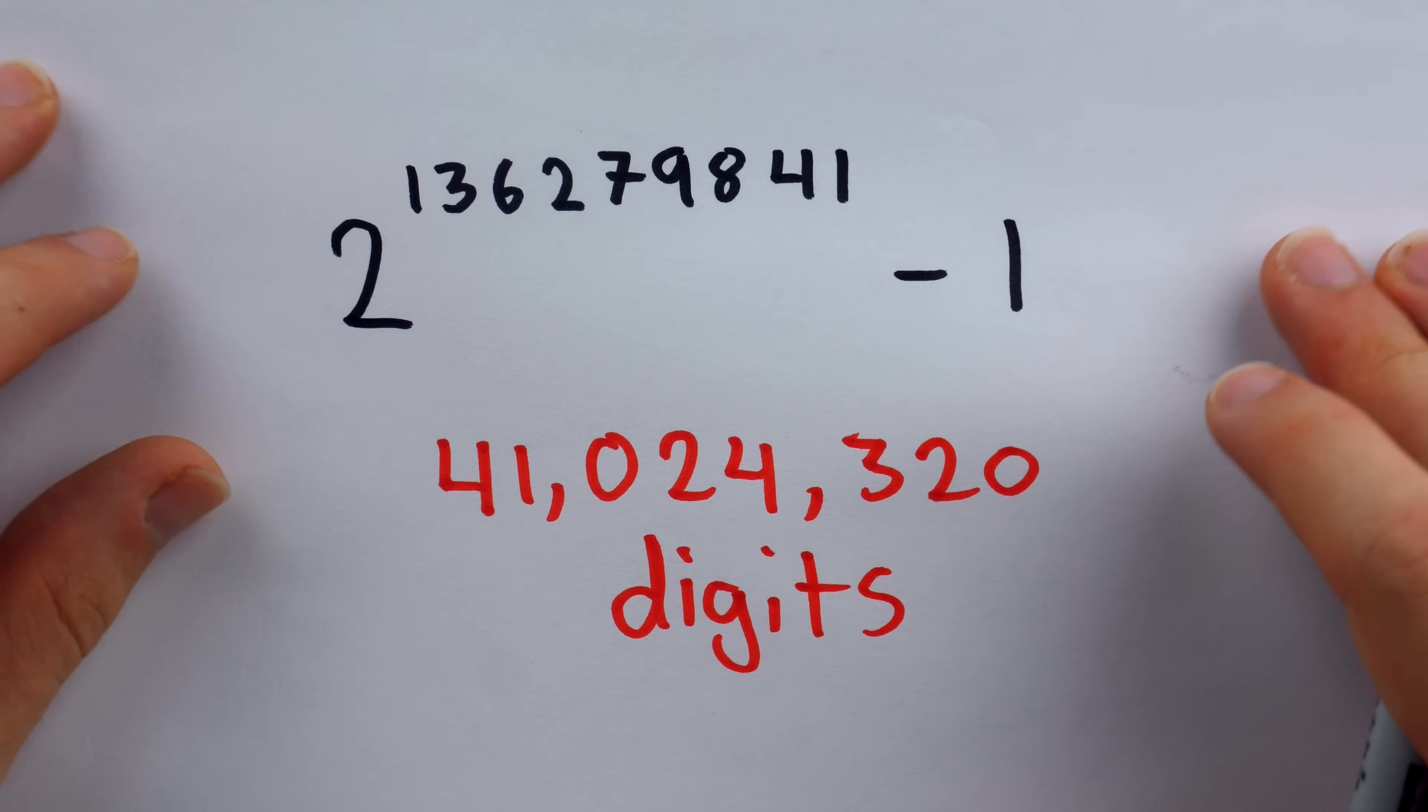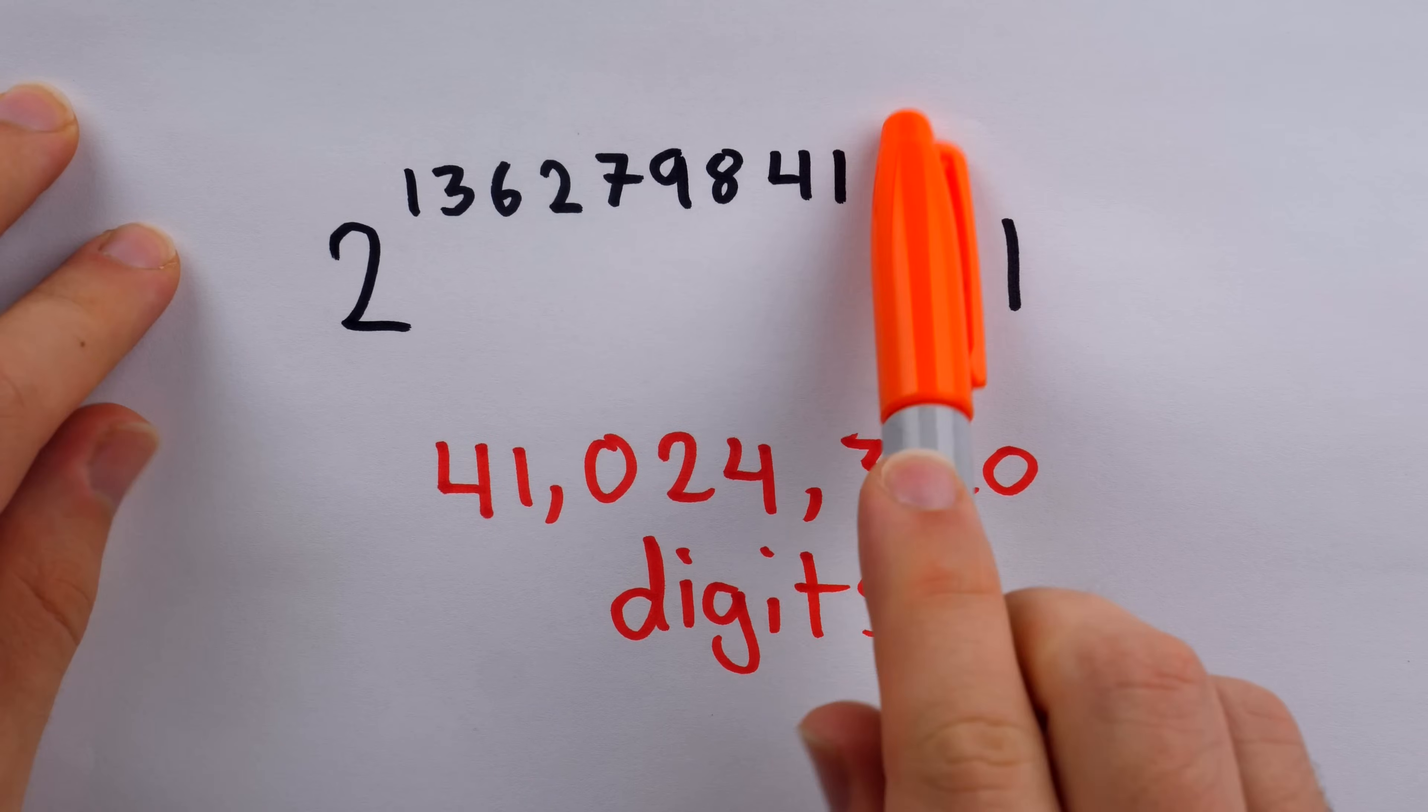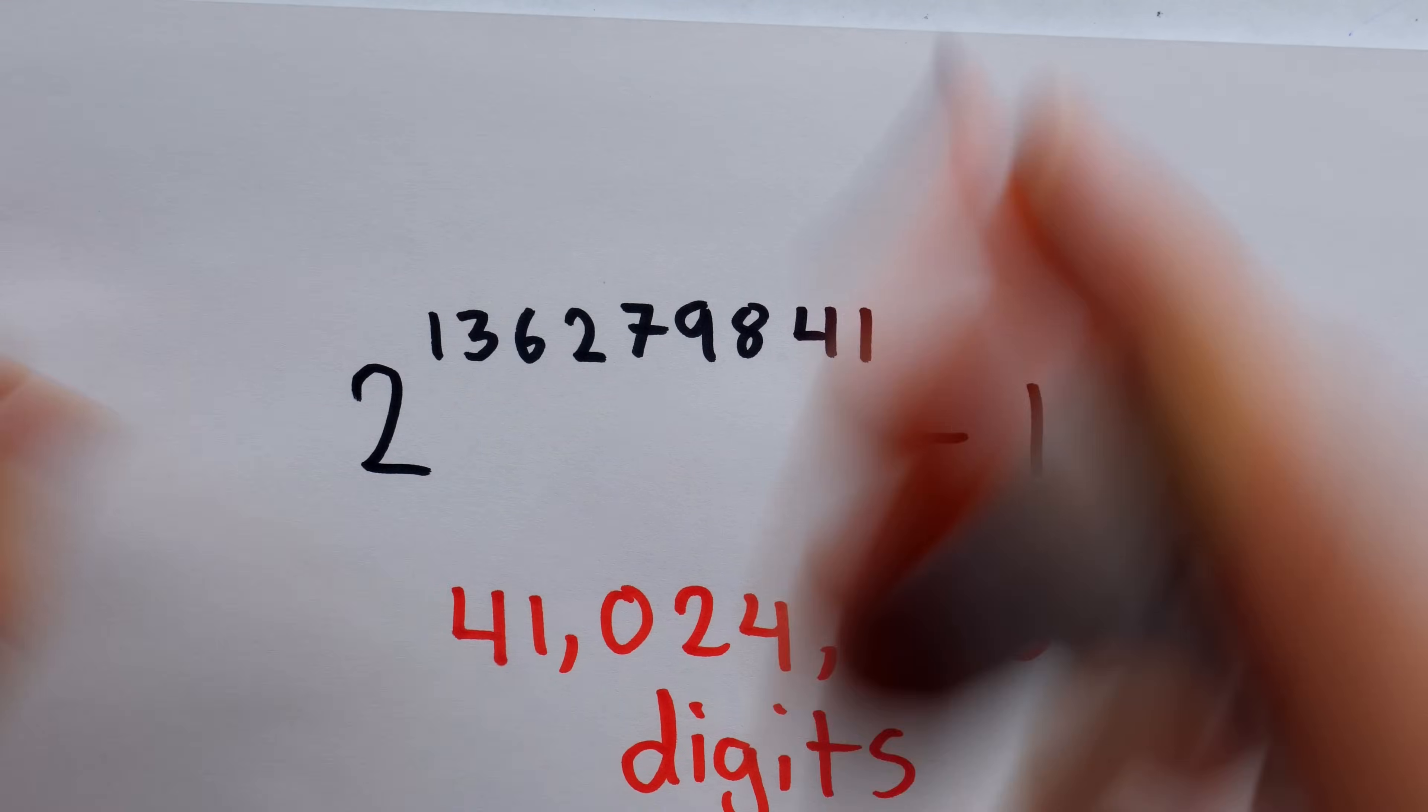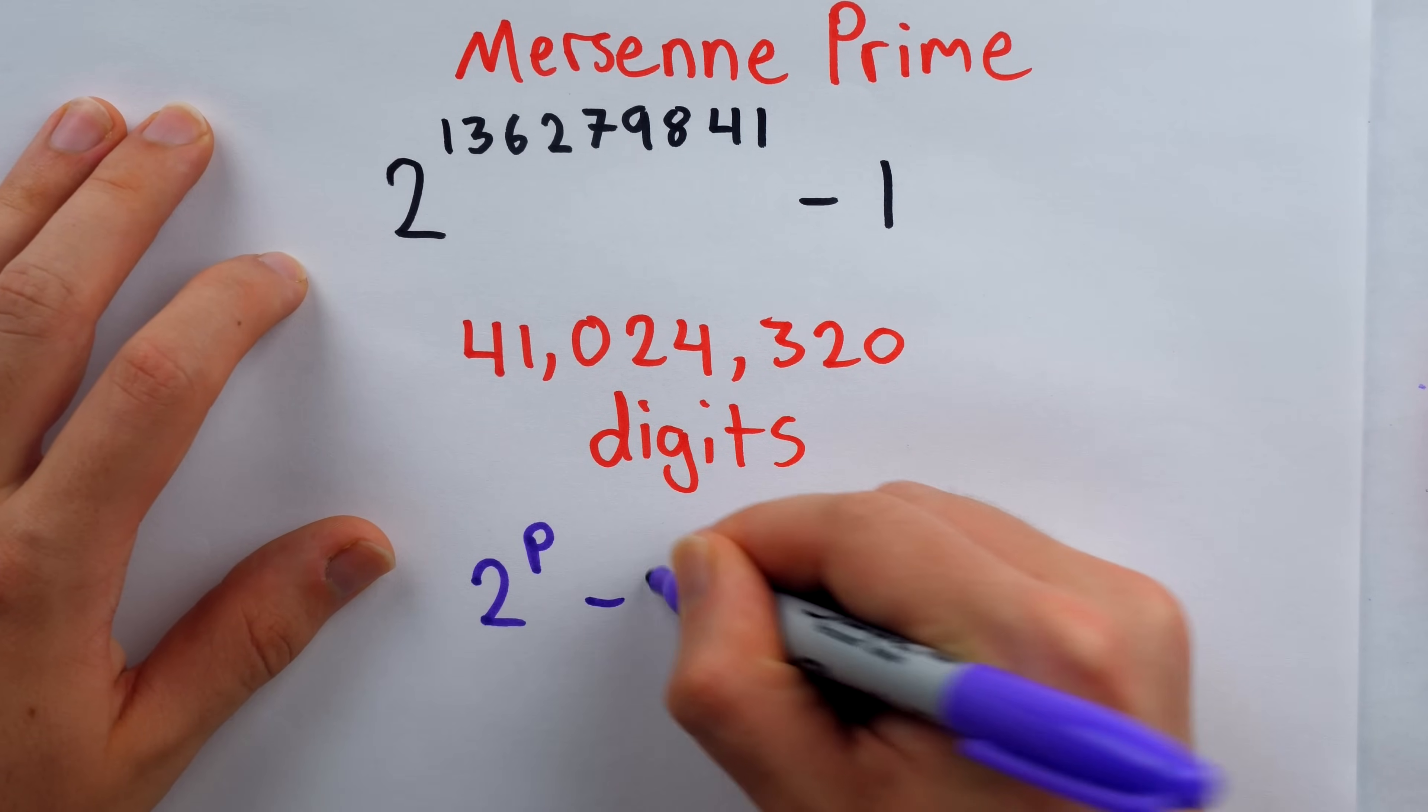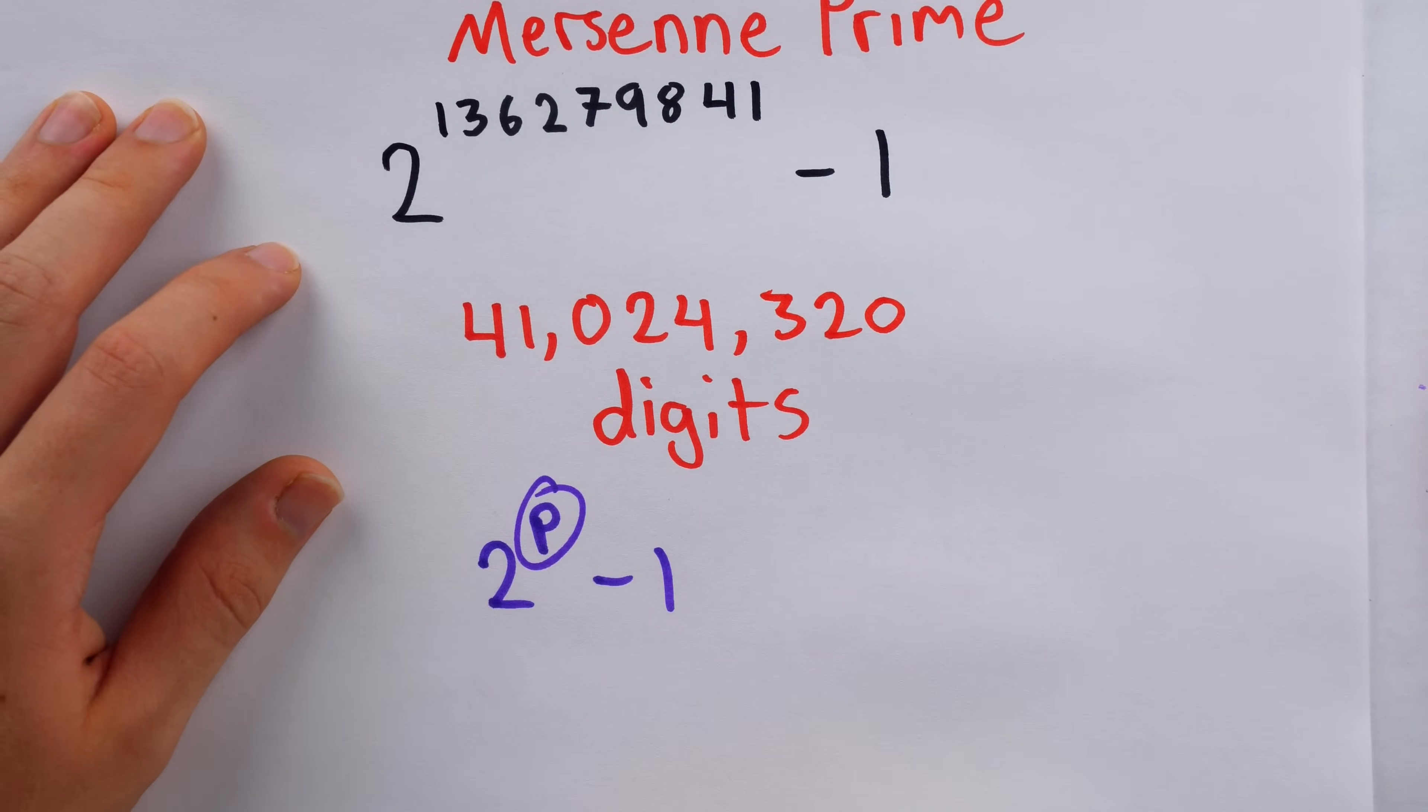And to people who have spent some time in the discussion regarding largest known primes, the form of this prime will look familiar. It's one less than a power of two. Prime numbers like this are called Mersenne primes. So a Mersenne prime is a prime number of the form two to the p minus one, where p is itself a prime number.